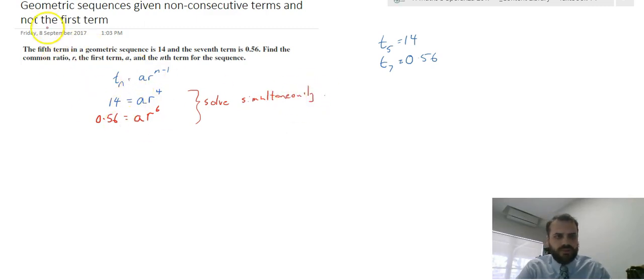So if I look at these, one way that you can solve them simultaneously, there are several ways, but I'm going to rearrange them both to make a the subject. So if I call this equation 1, I call this equation 2. Equation 1 can be rearranged to say that a equals 14 over r to the 4. And equation 2 can be rearranged to say that a equals 0.56 over r to the 6.